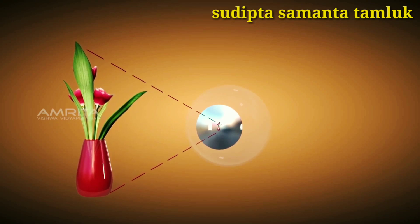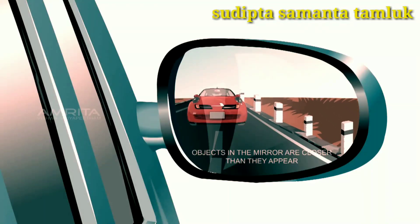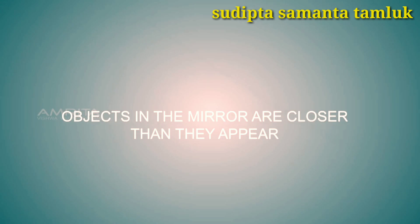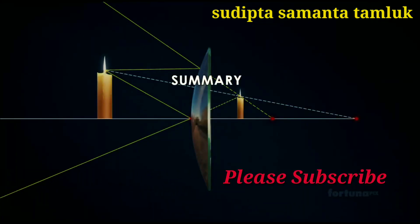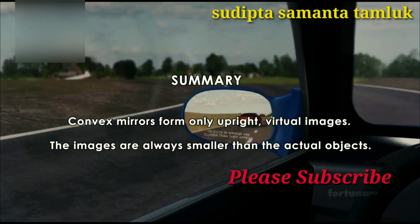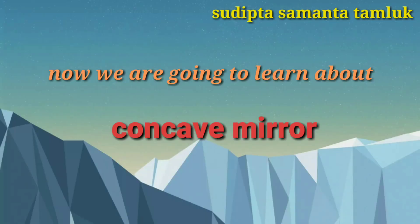When an object is placed in front of a convex mirror, a virtual, small, and erect image is formed between the pole and the focus. The image is smaller than the object, so it seems to be farther away from the mirror. Due to this property, convex mirrors are used as rear-view mirrors in vehicles, with the warning 'Objects in the mirror are closer than they appear.' Summary: convex mirrors form only upright virtual images that are always smaller than the actual objects.